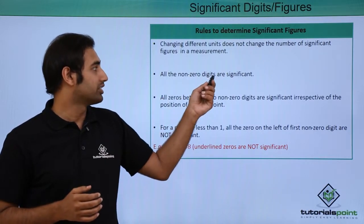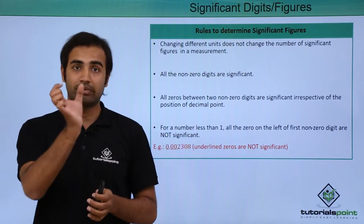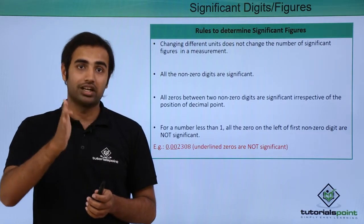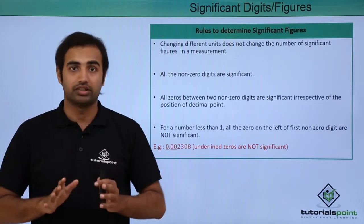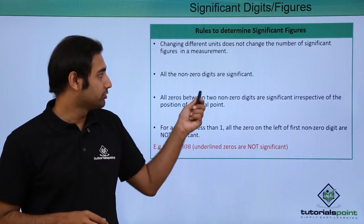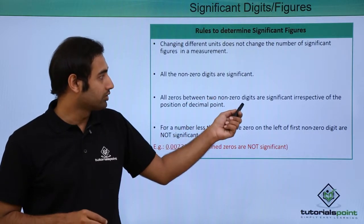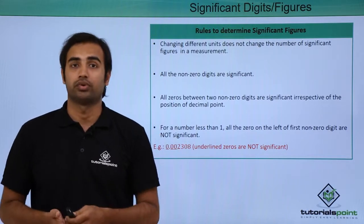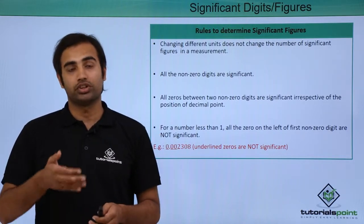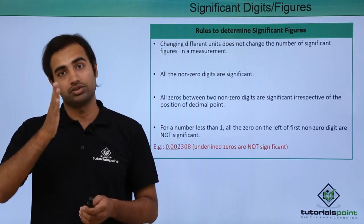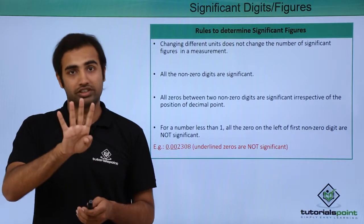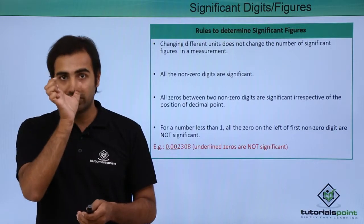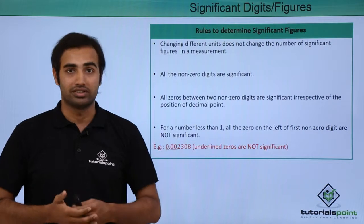All the non-zero digits are significant — whatever digits are non-zero will all be considered significant. All zeros between two non-zero digits are significant irrespective of the position of the decimal point. So for example in case of a number like 1005, there will be four significant digits because the zeros are present between the two non-zero numbers.